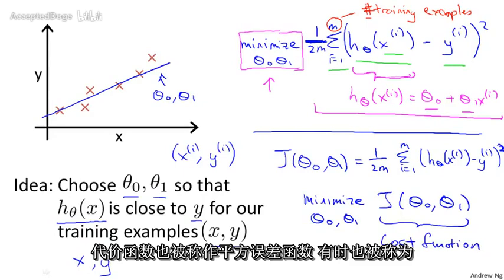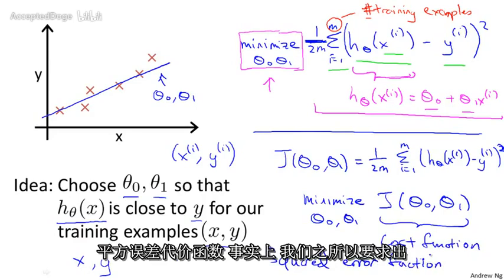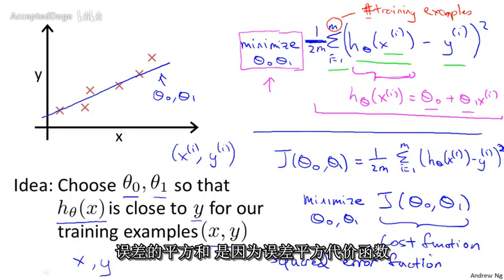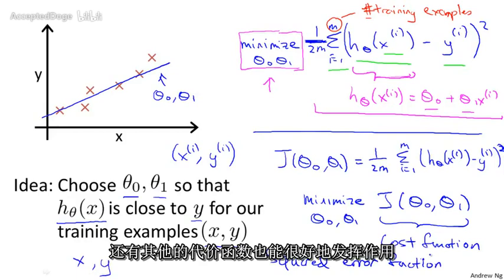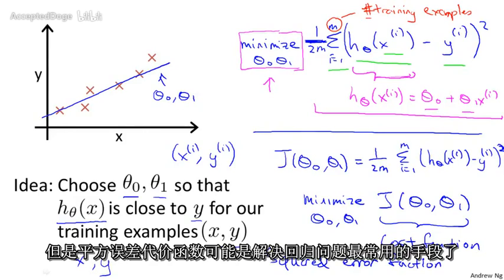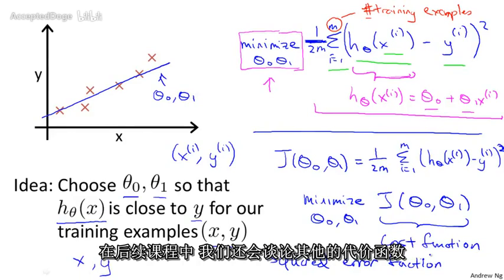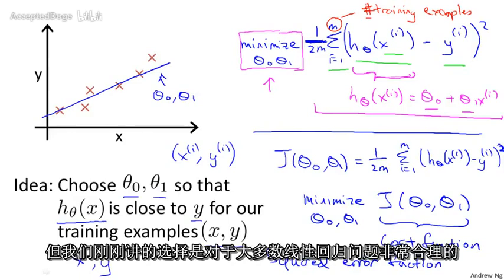So this cost function is also called the squared error function, or sometimes called the squared error cost function. And it turns out that—why do we pick the squares of the errors? It turns out that the squared error cost function is a reasonable choice and will work well for most problems, for most regression problems. There are other cost functions that will work pretty well, but the squared error cost function is probably the most commonly used one for regression problems. Later in this class, we'll talk about alternative cost functions as well. But this choice that we just had should be a pretty reasonable thing to try for most linear regression problems.